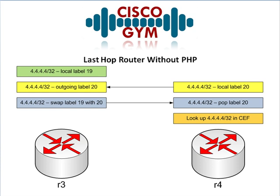Before we get into the definition of Penultimate Hop Popping, let's take a look at how we would expect an MPLS network to work just normally. In this case, R4 is going to be the end of the line — it could be the provider edge router, or egress router. In this case it's going to be the end of the line for our prefix 4.4.4.4/32, which is actually going to be the loopback zero interface on this router. So in normal MPLS operation, R4 says 4.4.4.4/32 is in my local routing table, therefore I have to assign it a local label — I'm going to give it label 20. Once I give it this label, I'm going to tell my upstream neighbor via LDP, the Label Distribution Protocol, that I have this prefix with label 20.